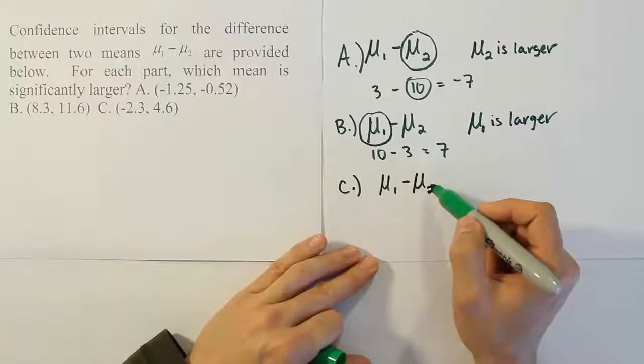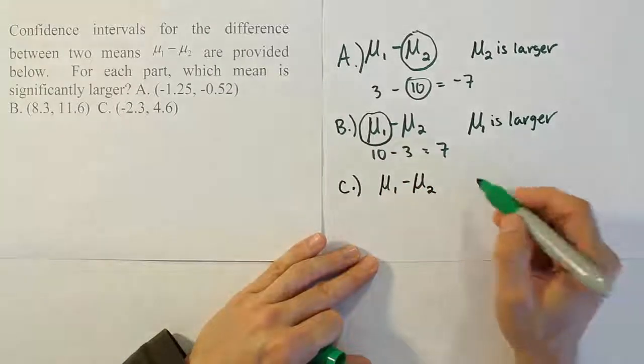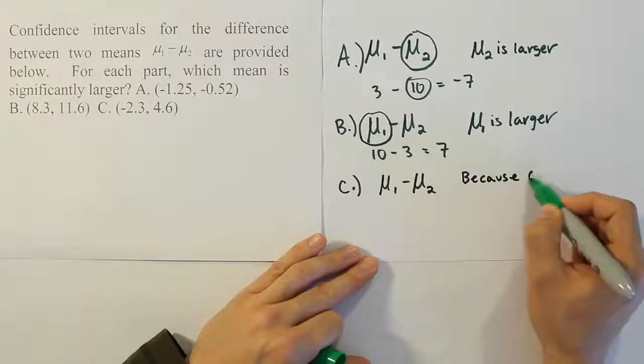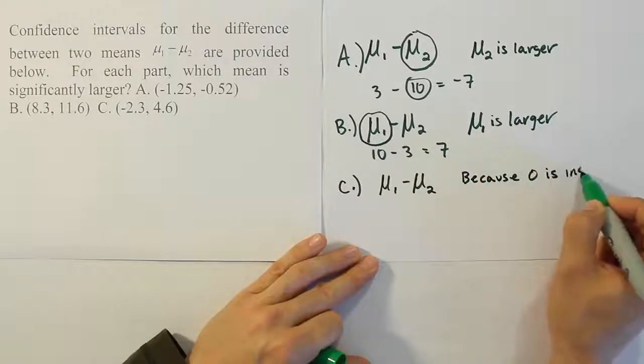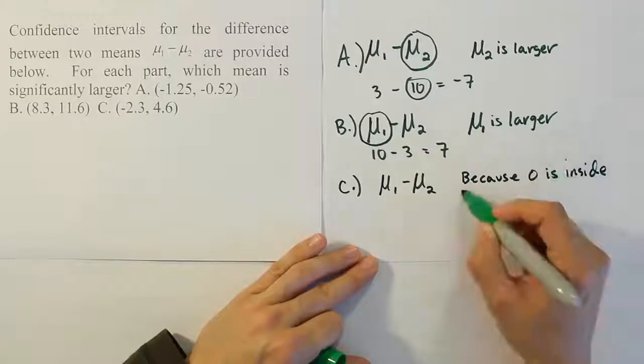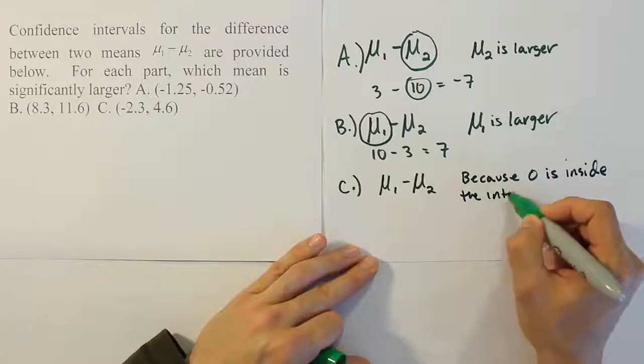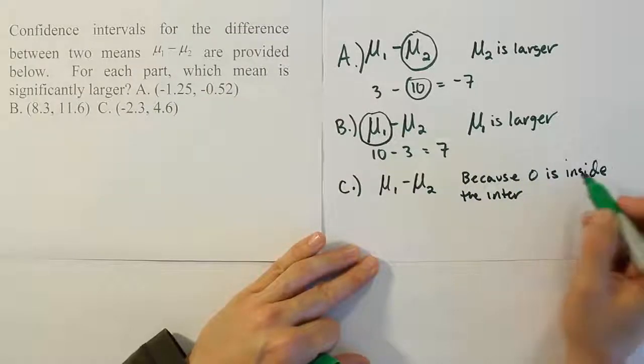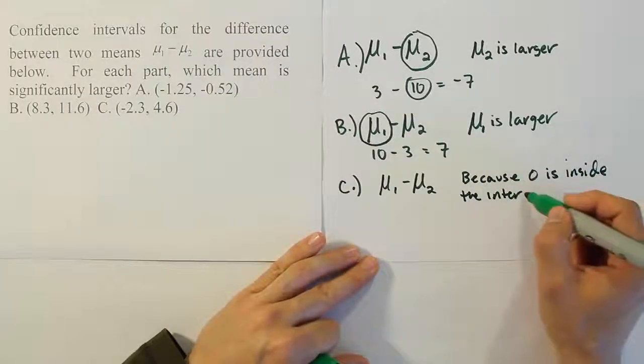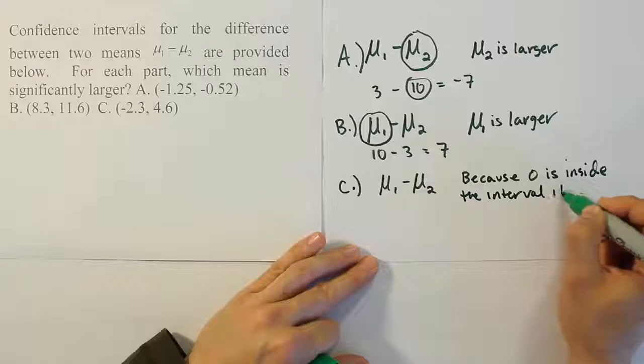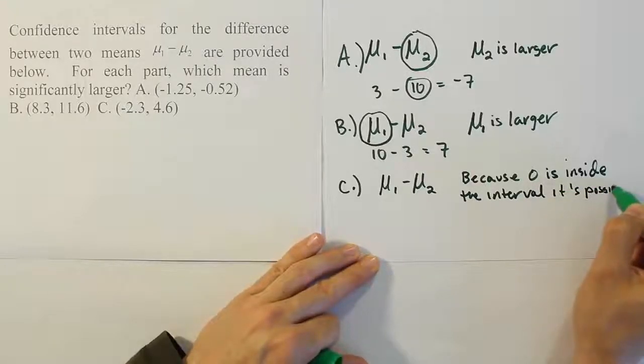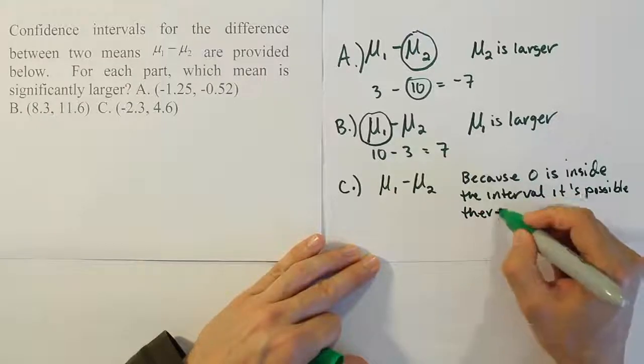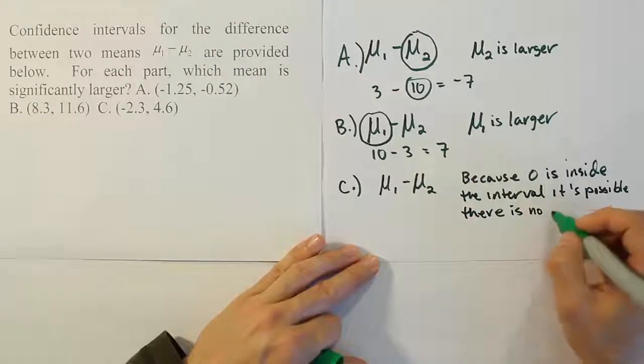what ends up happening is that you have 0 as a possible value. So because 0 is inside the interval, and I know it's inside the interval because it crosses from negative to positive, so it must cross 0. So because 0 is inside the interval,